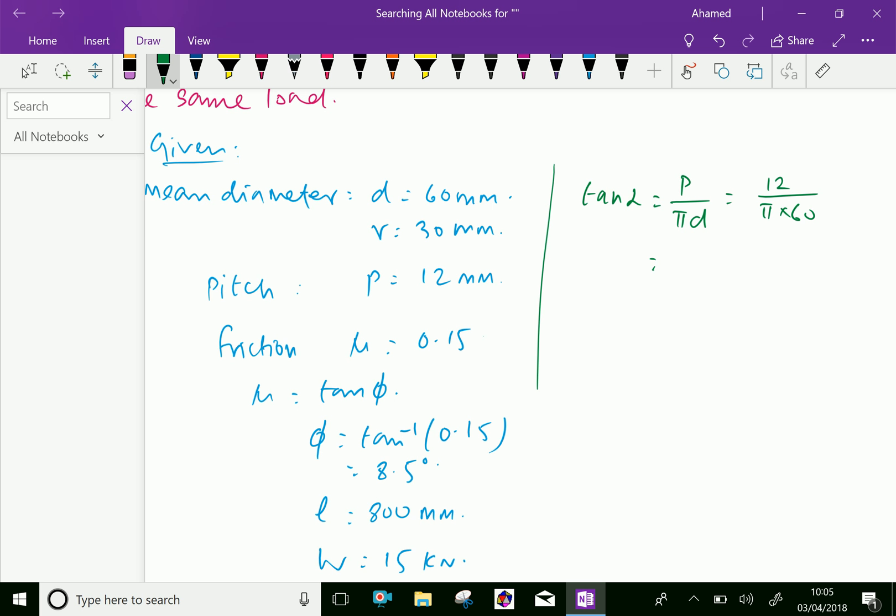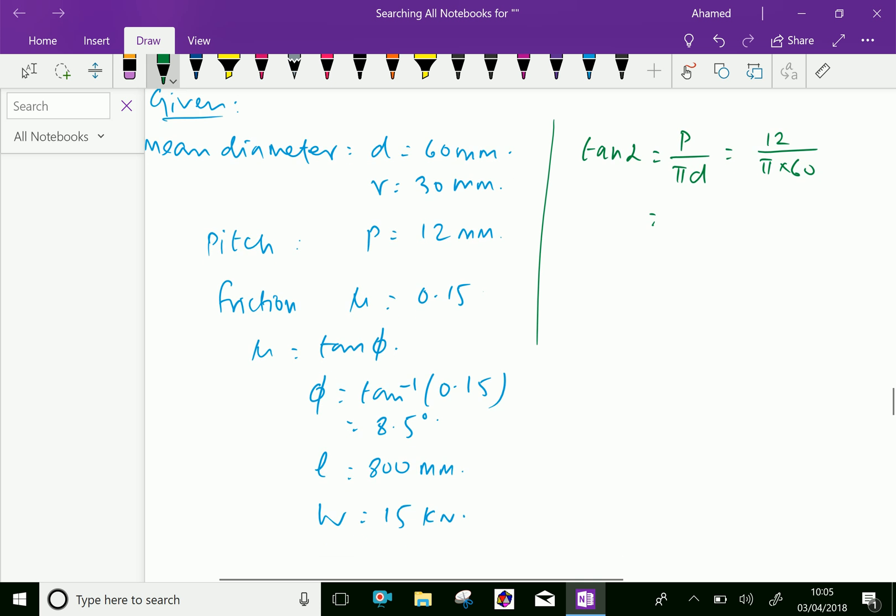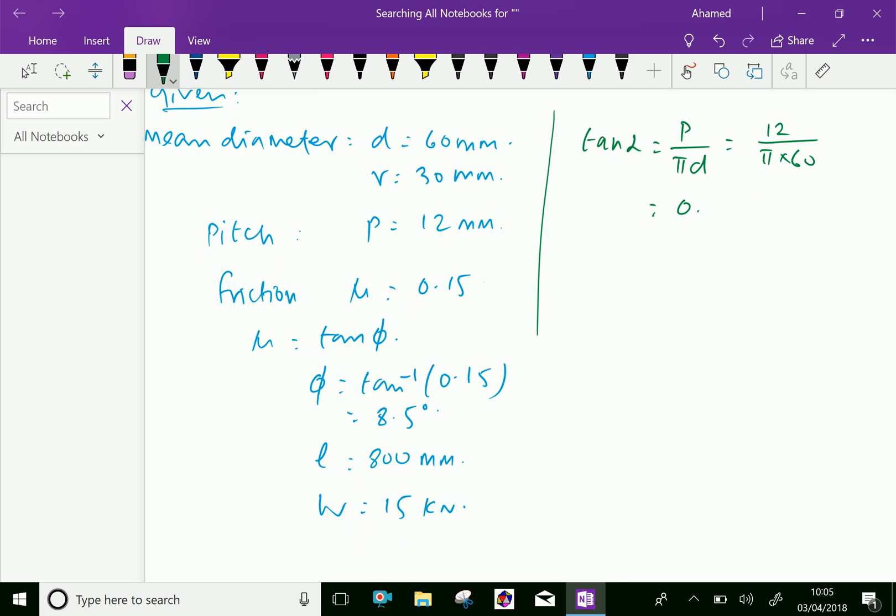That equals 0.064. Therefore, alpha equals tan inverse of 0.064, which gives 3.67 degrees.